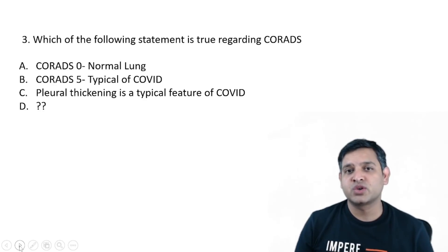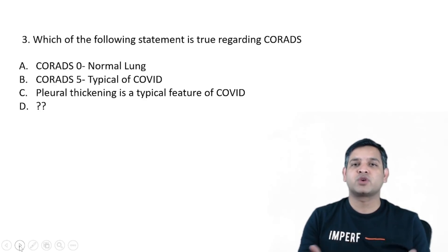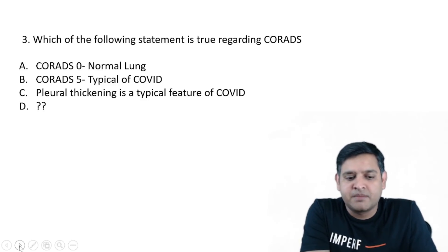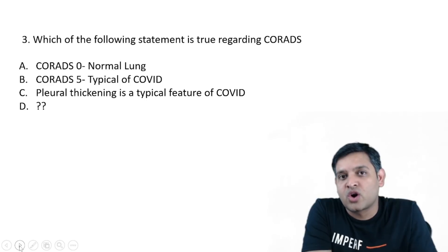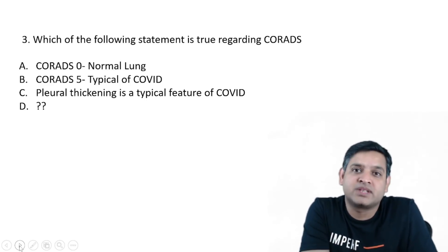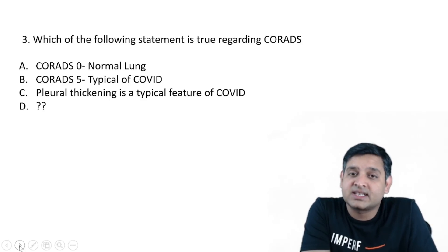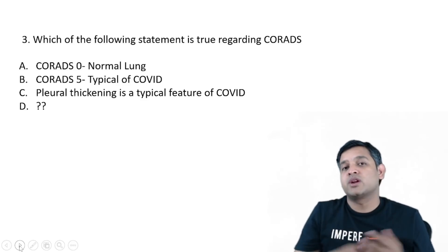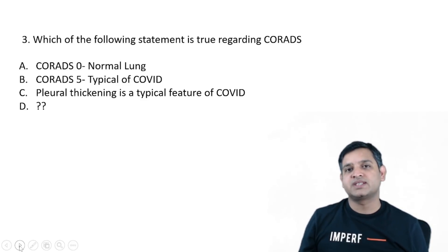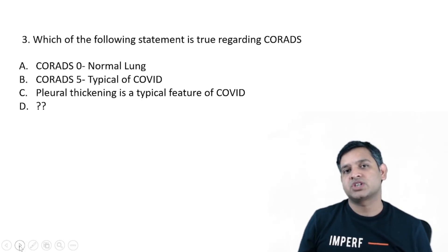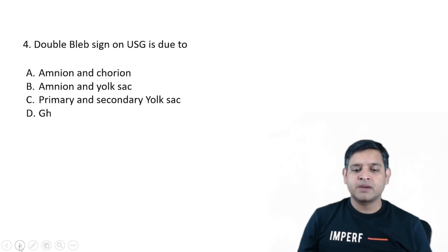There was one question on CO-RADS. If you are a regular viewer of my YouTube channel, I have spoken a lot about CO-RADS. Three choices I could pick up: CO-RADS 0 was described as normal lung — that is wrong. CO-RADS 1 is considered as normal lung in all the RAD systems we have discussed. CO-RADS 5 is considered typical of COVID. Pleural thickening is a feature of COVID — no, pleural thickening and pleural effusion are findings not commonly seen in COVID. Please go back to the channel for more discussion on COVID findings.